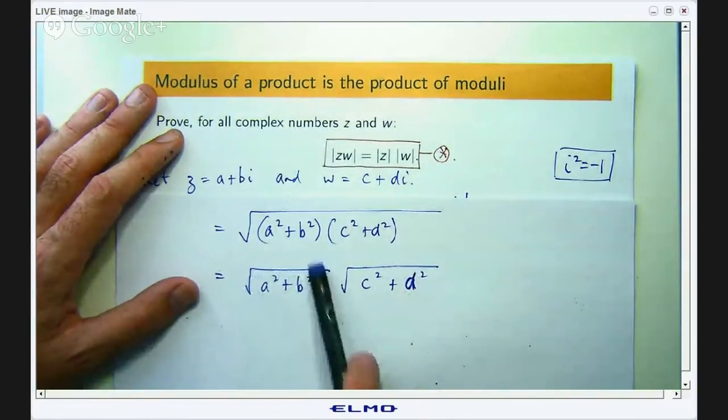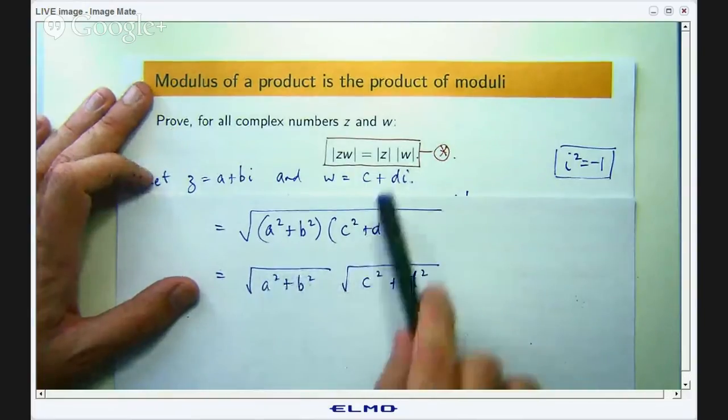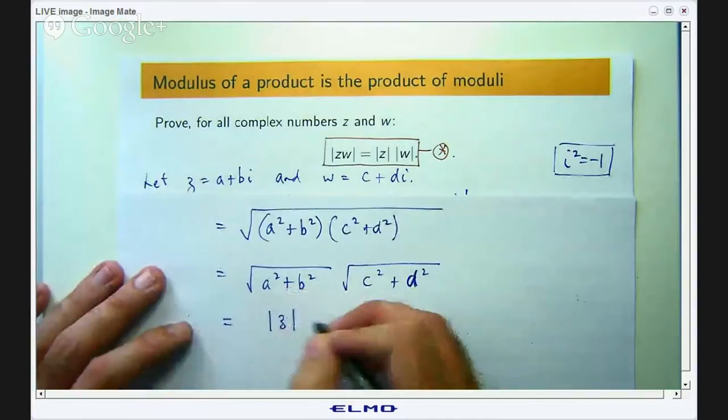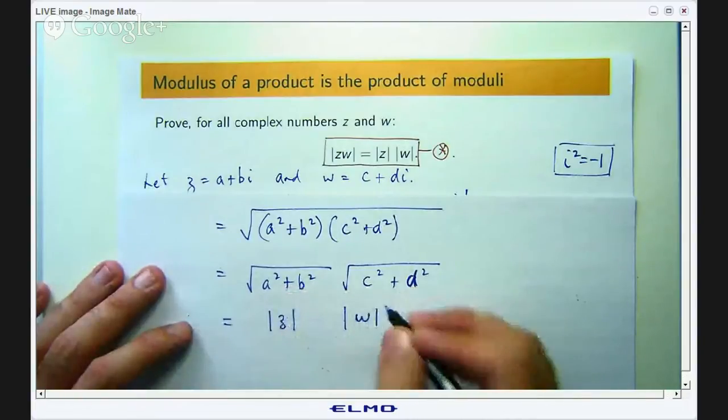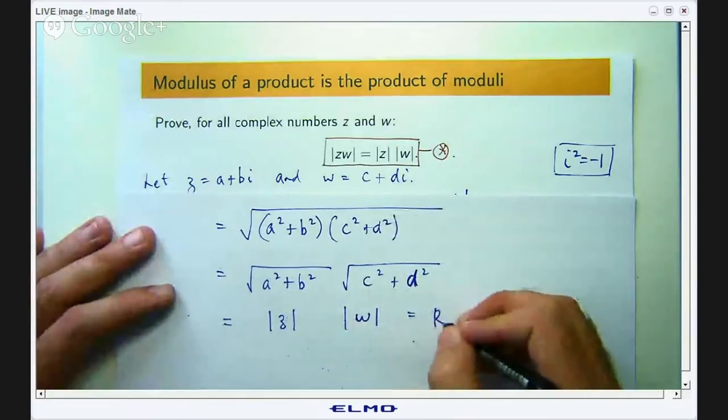This is the modulus of z, this is the modulus of w, so I've got the product that I wanted. And that's the right-hand side of the star.